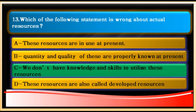Option C states: 'we don't have the knowledge and skills to utilize these resources.' This is not correct about actual resources — it is correct about potential resources. So the wrong statement about actual resources is C, and that is our answer.